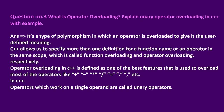Question 3: What is operator overloading? Explain unary operator overloading in C++ with example. Operator overloading is a type of polymorphism in which an operator is overloaded to give it a user-defined meaning. C++ allows us to specify more than one definition for a function name or an operator in the same scope, which is called function overloading or operator overloading respectively. It is one of the best features used to overload most of the operators like plus, minus, multiply, divide, equals to, dot, etc.